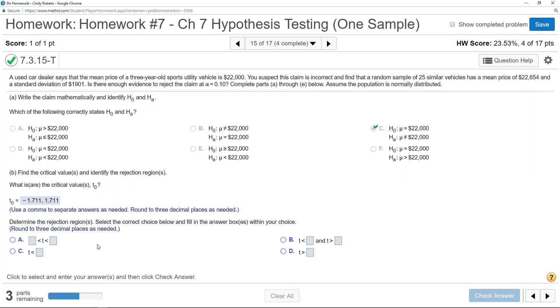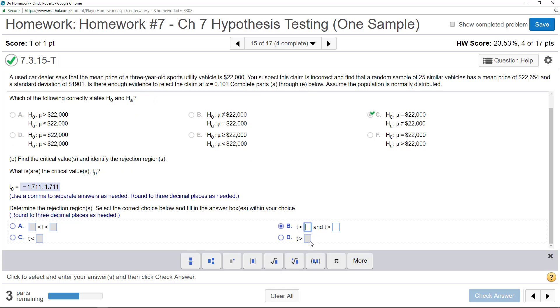So how do we know if we reject? We would reject if we're to the left of negative 1.711, or we would reject if we're to the right, so greater than 1.711.